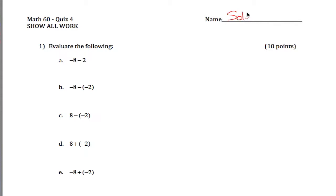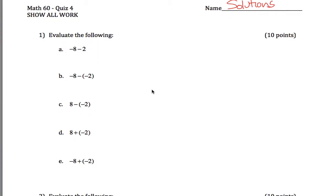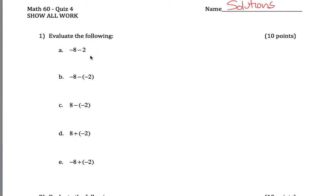Here are solutions to quiz 4 for Math 60. We're given 1, 2, 3, 4, 5 different questions, basically adding and subtracting 8 and 2 with some negatives thrown in.